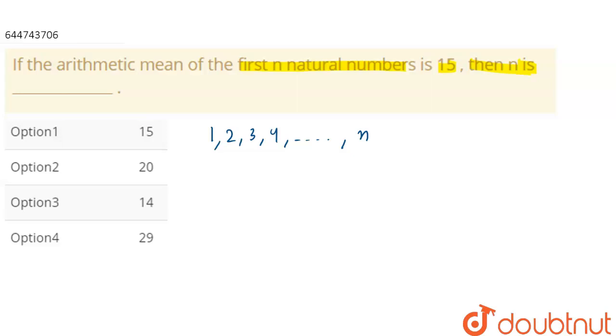It is given that arithmetic mean of first n natural numbers is 15. And we know mean is what? Mean is sum of all numbers upon total number of observations.